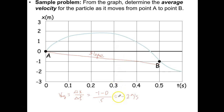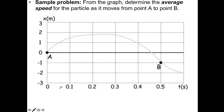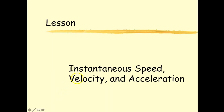That one's pretty easy. But finding the average speed from A to B is more difficult, because now I have to consider the entire curved path — how far each little section is — rather than just the straight-line distance. Average speed is different from average velocity. In the next video, we'll talk about instantaneous speed, velocity, and acceleration.